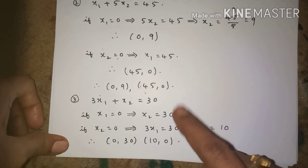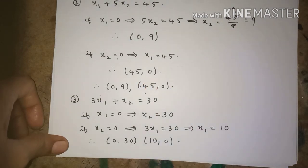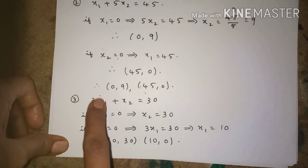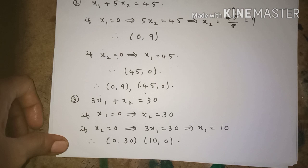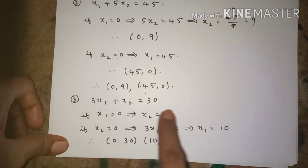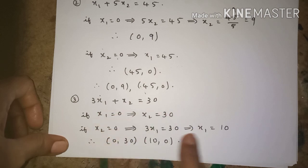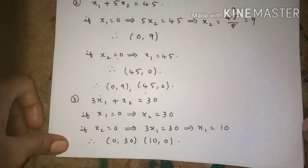In the same way, using the third constraint in equation form: 3x1 plus x2 equals 30. If x1 equals 0, x2 equals 30. If x2 equals 0, then 3x1 equals 30, so x1 equals 10. Therefore the points are (0, 30) and (10, 0). Like that, we have got all three sets of points.